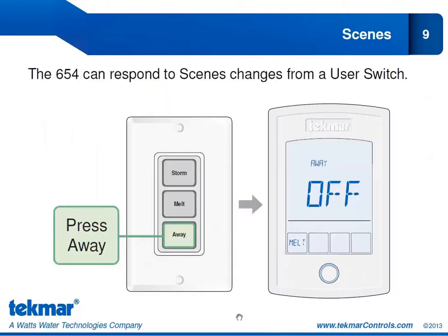This slide shows in greater detail how the 654 responds to changes from a user switch. If I push the away button on my user switch, the word 'away' will show up on my 654, and it will also tell me my snowmelt system is off because I am in the away state. Similarly, pushing the melt button will display 'melt,' and pushing the storm button will display 'storm.'